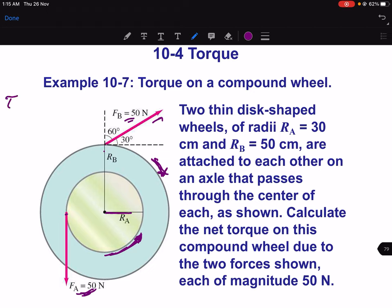So tau A equal to F_A is negative. Tau A equal to R_A times F_A. So F_A is negative. Tau B is R_B times... Look at this formula: torque equal to R times F.